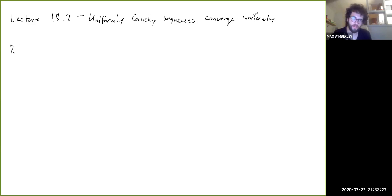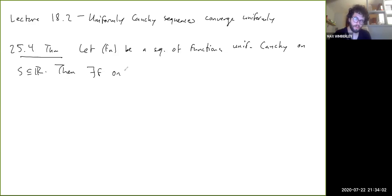So, this is Theorem 25.4. Let fn be a sequence of functions on S that's uniformly Cauchy on some subset S of R. Then there exists a function f on S such that fn converges to f uniformly on S.